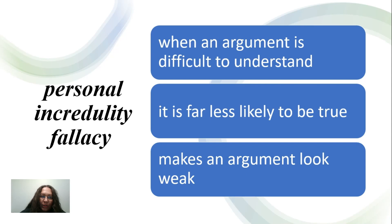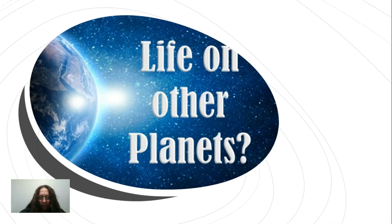The last type of fallacy we're going to talk about today is the personal incredulity fallacy. This happens when an argument is considered less likely to be true simply because it is difficult to understand. Which means: I don't believe this is true because I don't believe in that thing. For example: I don't believe there is life on other planets, therefore the argument is wrong. And that is not true — that would be an example of a logical fallacy.